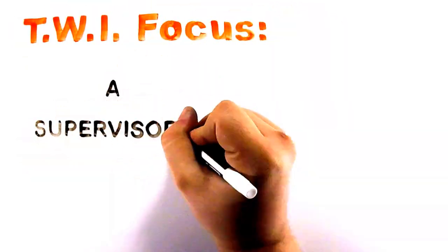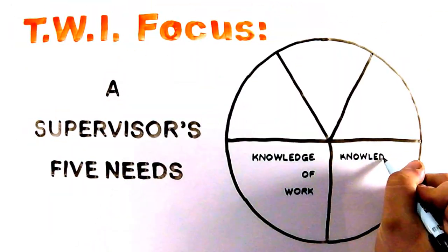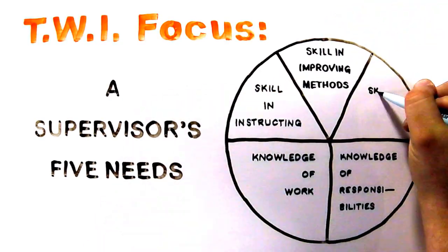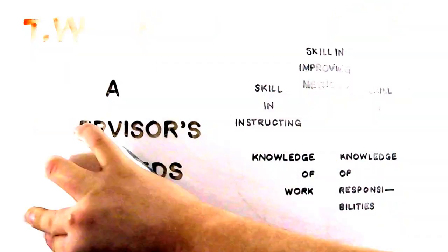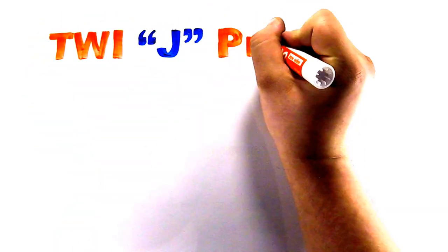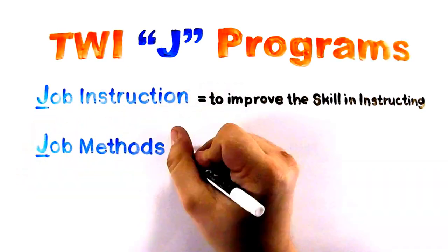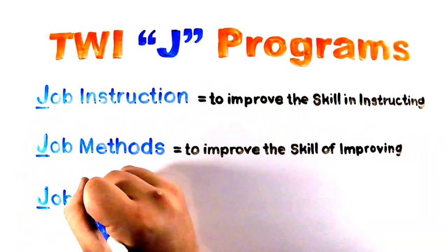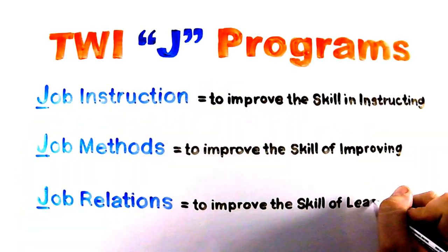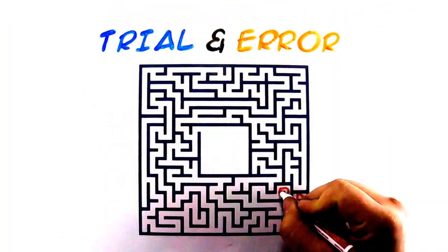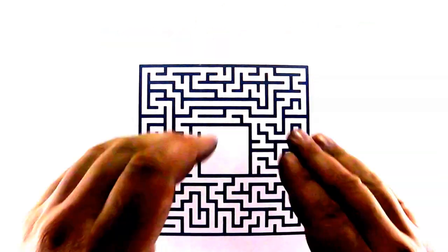TWI focused on the five needs of a supervisor: knowledge of work, knowledge of responsibilities, skill in instructing, skill in improving methods, and skill in leading. The TWI service rolled out a series of programs most commonly referred to as the J programs, based on Charles R. Allen's work: job instruction to improve the skill of instructing, job methods to improve the skill of improving, and job relations to improve the skill of leading. It would take several months of trial and error for Dooley and Dietz to craft these programs into their simple four-step methods.